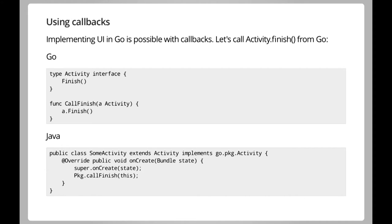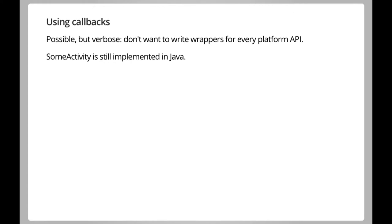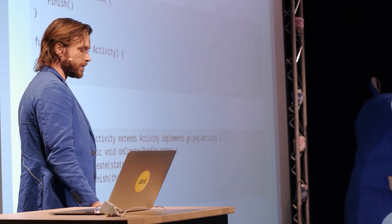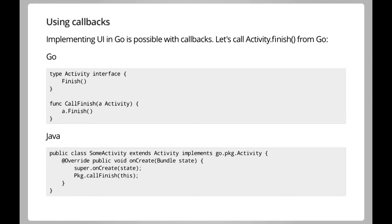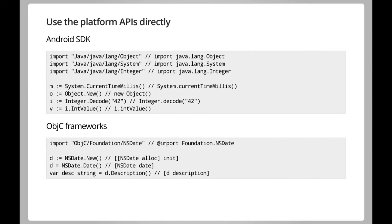You can get part of the way there using interface tricks: write an interface with a method that matches a platform API — for example, an Activity interface with a finish method. If you implement that interface in Java, you can pass the activity into Go and Go will be able to call that finish method. But this approach is verbose and tedious because you have to write an interface for every class you want to access in Go.